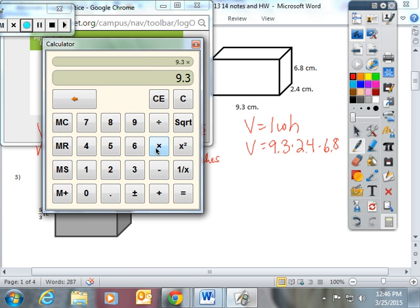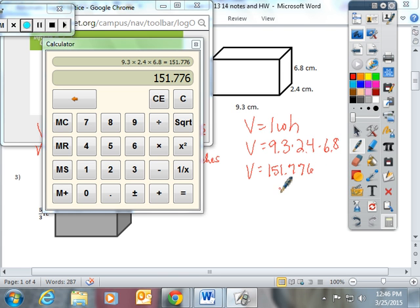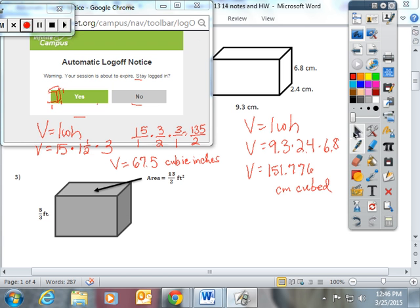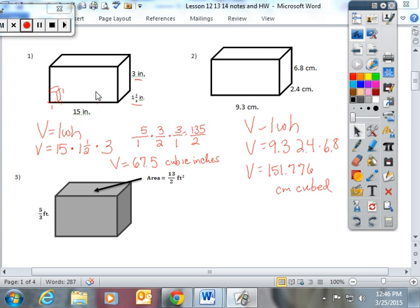Nine point three times two point four times six point eight is going to give you a volume of a hundred and fifty-one and seven hundred and seventy-six thousandths centimeters cubed or cubic centimeters. Cubic inches or centimeters cubed. You could have written inches cubed here or cubic centimeters here. You could have switched them.